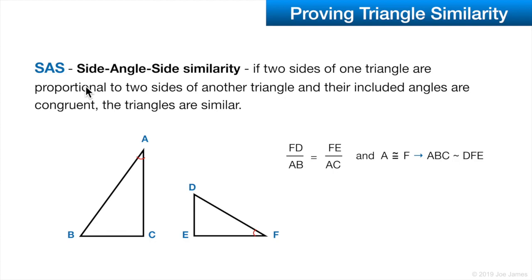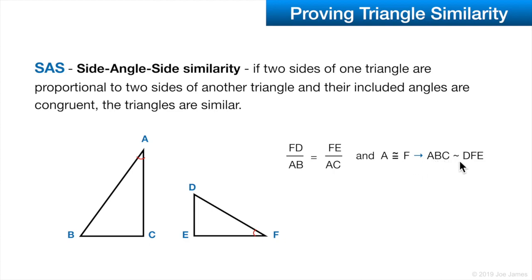Another way to prove triangle similarity is side-angle-side similarity, which states that if two sides of one triangle are proportional to two sides of another triangle, and their included angles are congruent, then the triangles are similar. The two sides don't need to be congruent — just proportional. So if we know angle A is congruent with angle F, then AC must be proportional to FE, and the hypotenuses AB and FD must also be proportional. If those two sides are proportional and angle A is congruent with angle F as the included angles, then we know the two triangles are similar.